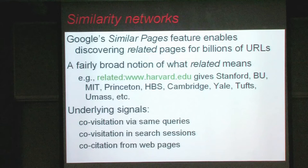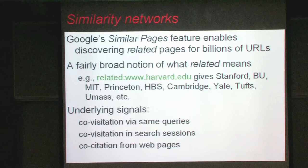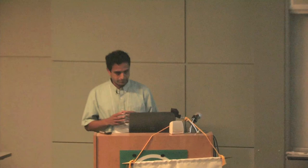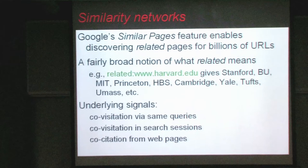Let's develop this notion of similarity networks. Google has a feature called similar pages — next to every search result there is a tiny little word that says 'similar.' If you click on that, you get other web pages similar to that URL, with coverage for about a billion or so URLs. This is a feature I worked on with Google, and we pushed quite a lot of interesting algorithmic work into it. The notion of 'related' is fairly broad, and it's a bit hard to pin down exactly what one means by related.